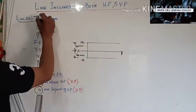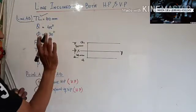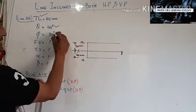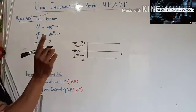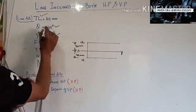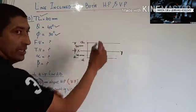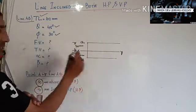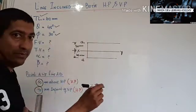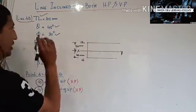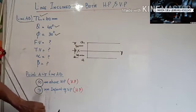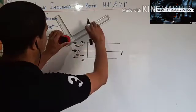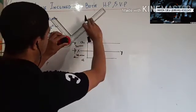The true length of the line is given as 100 mm, and the true angles are given — the angle made with the horizontal plane and the angle made with the vertical plane are both given. So what I have to do is draw the true length at the angle of 45 degrees.